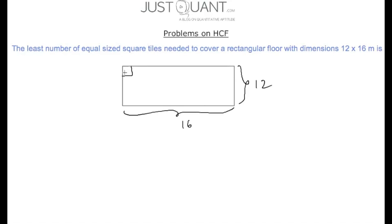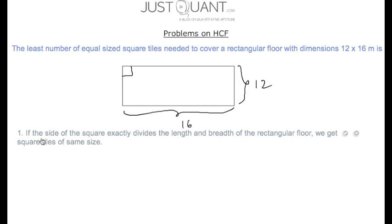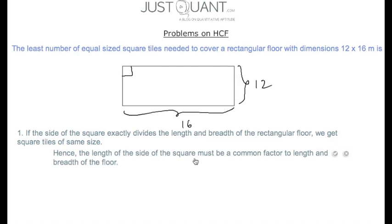When the side of the square exactly divides both the breadth and length of the rectangle, we get equal sized square tiles covering the entire rectangular floor. Hence, the length of the side of the square must be a common factor of the length and breadth of the floor.